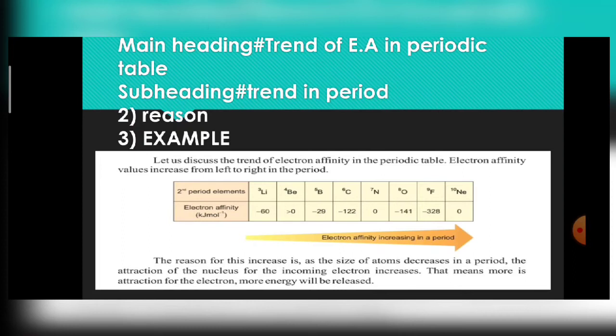There is another reason: repulsion that occurs between electrons, because both have negative charges. The electrons already present in the outer shell repel the incoming electron. However, the positive nucleus attracts the incoming electron more strongly, so at the end the electron is added. Due to the attractive forces of the nucleus, energy is released and the unstable system becomes stable. The reason for this increase is that as atomic size decreases in a period, nuclear attraction for the incoming electron increases, meaning more attraction leads to more energy released.